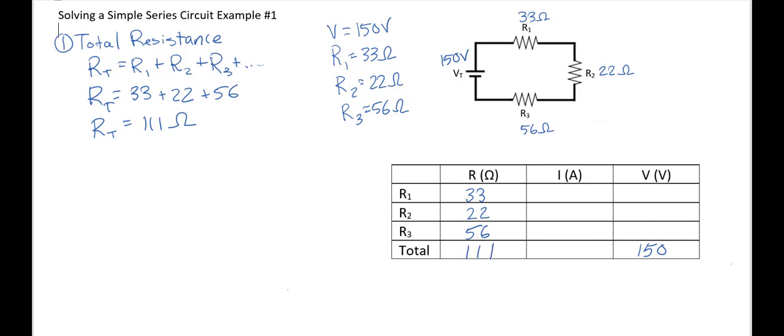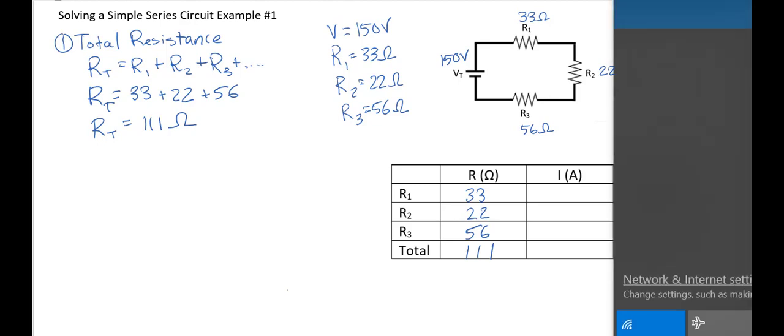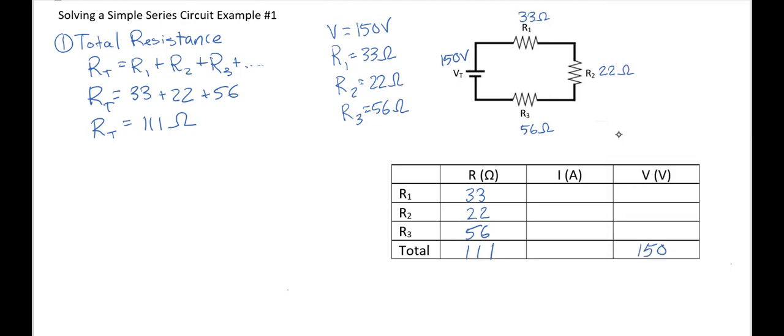Now here's the thing with the table. If you notice across the top, we have V, I, and R. So we know Ohm's Law tells us that V equals IR. Ohm's Law tells us that V equals IR.